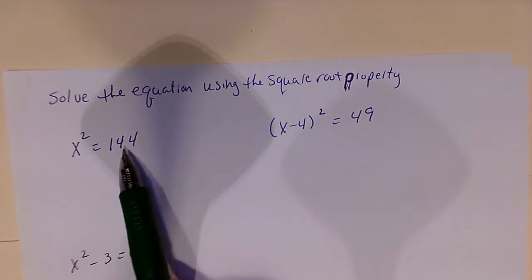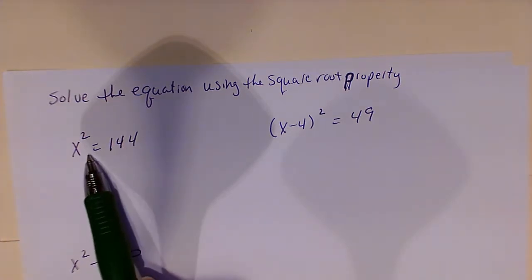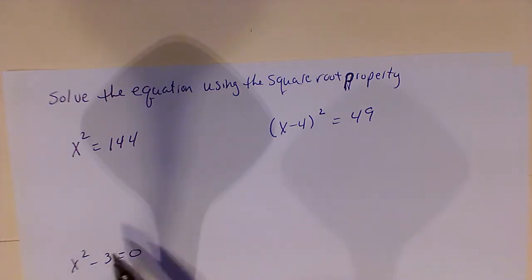We could solve this by subtracting 144 from both sides, getting the difference of squares, and then factoring out and finding the same answers. But this is a little faster to do and easier, fewer steps using the square root property.